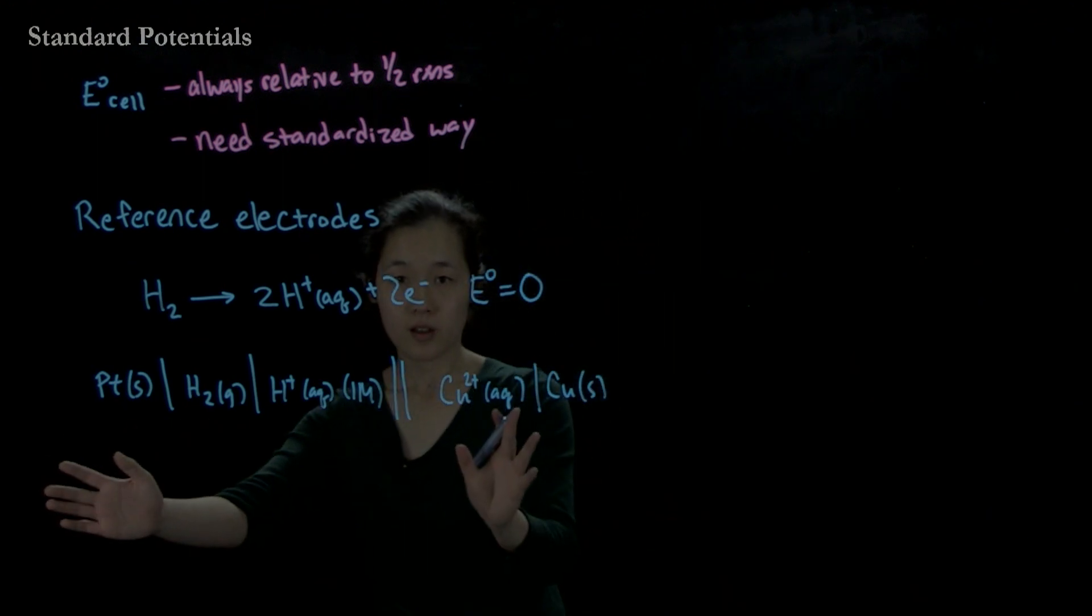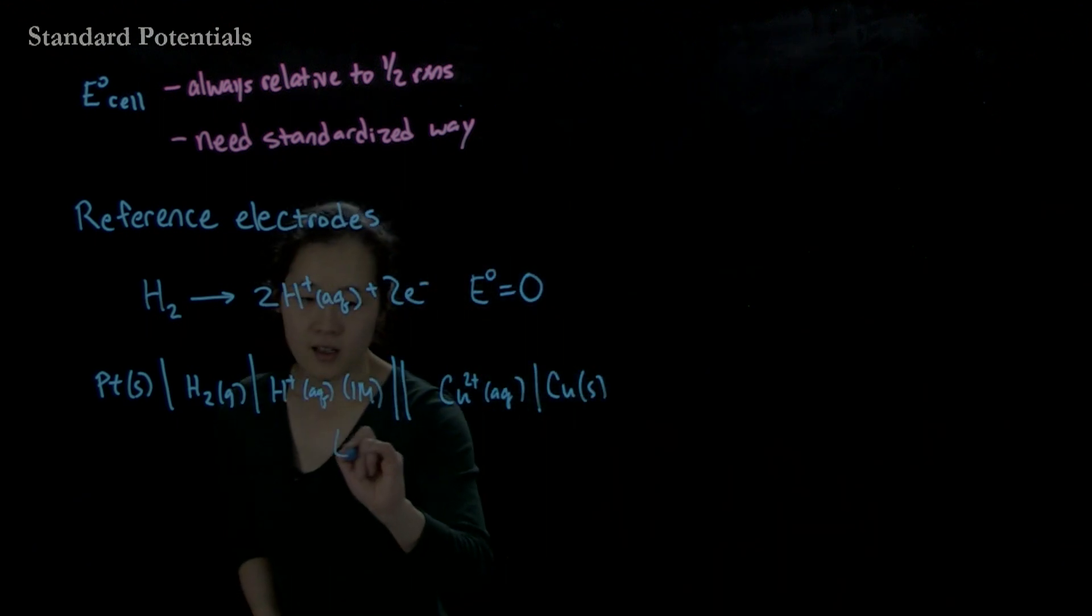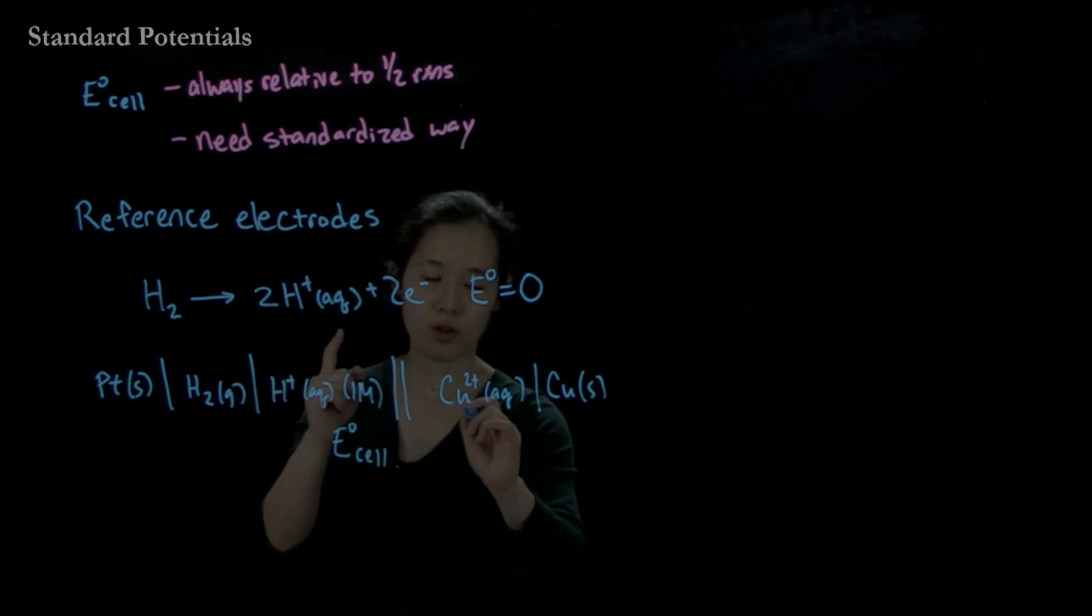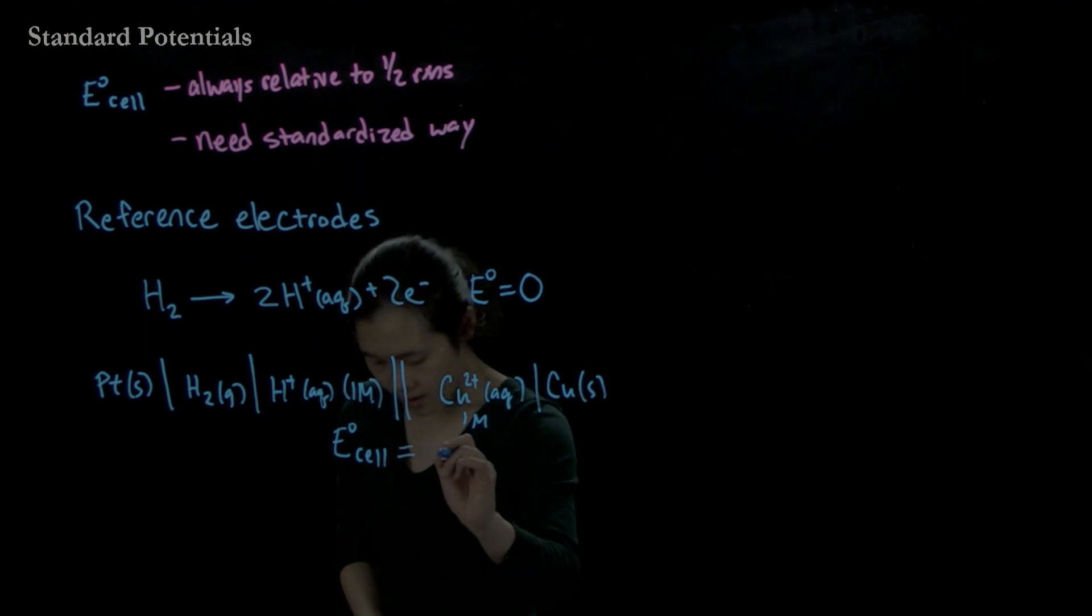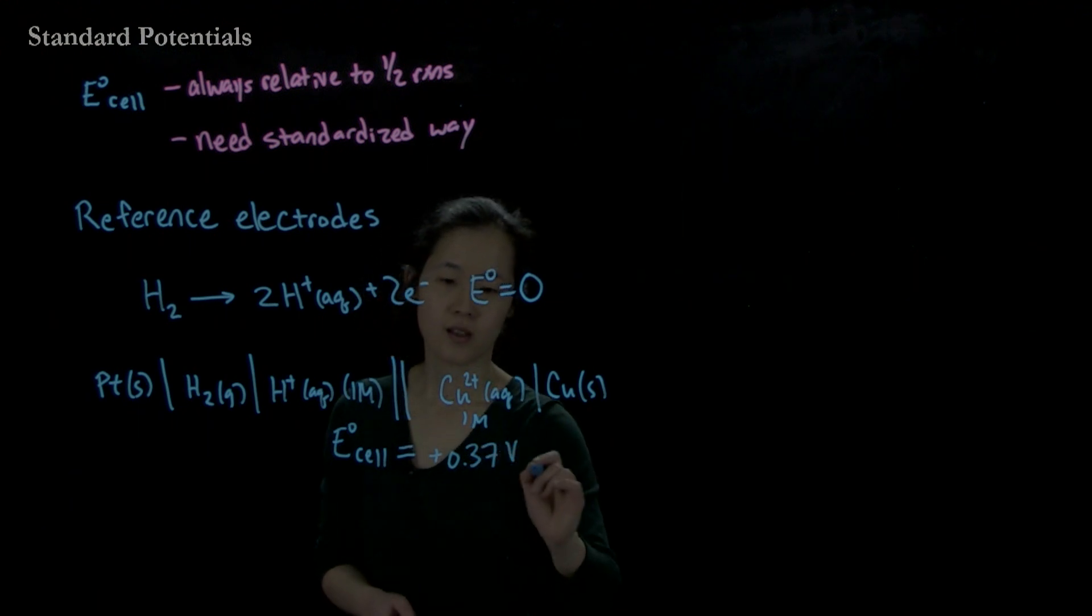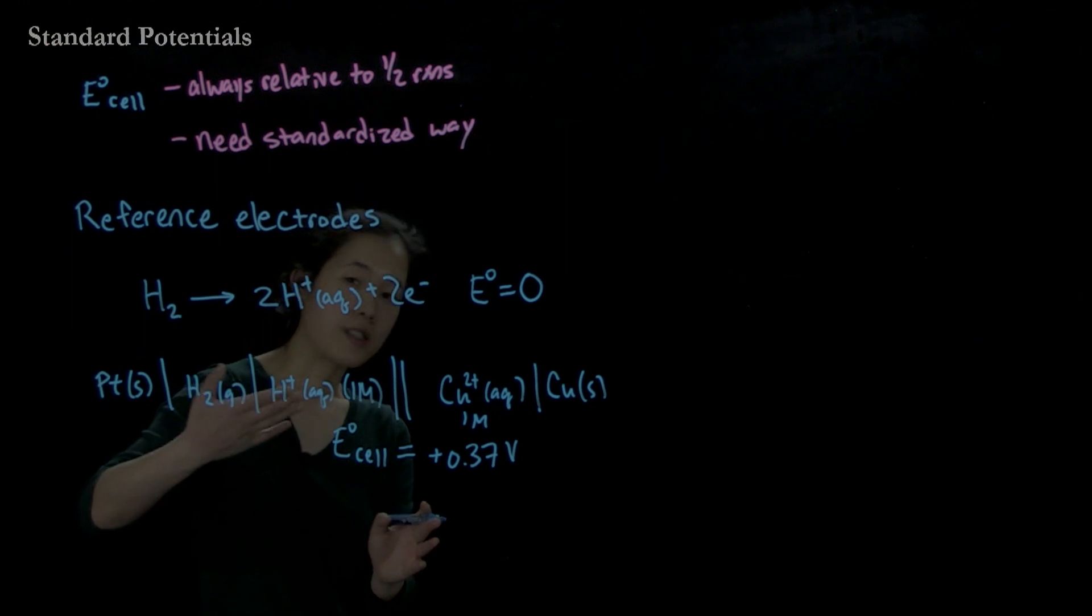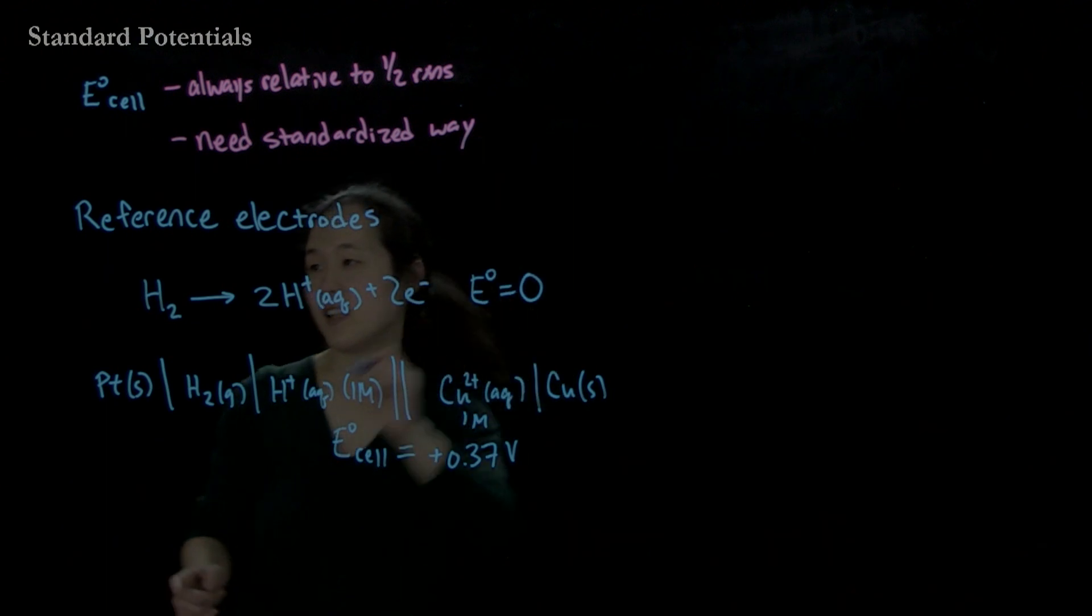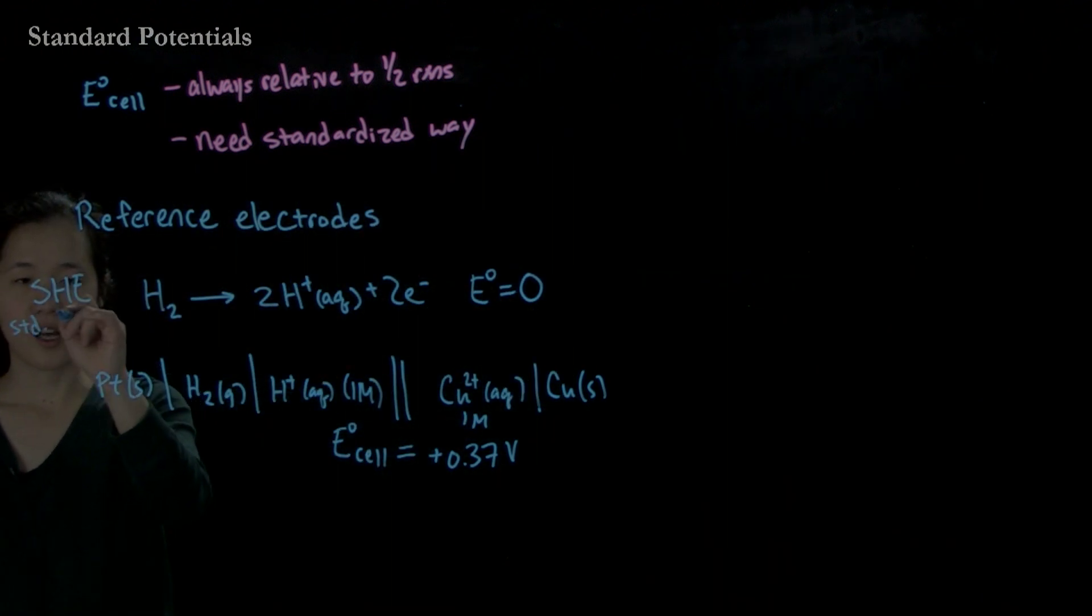We can measure the cell potential of this. And so it turns out that E naught cell - again, this is standard condition, so one bar, one molar, one molar, pure solid copper - and so this ends up being +0.37 volts. And so what this means is that if we then arbitrarily set our standard hydrogen electrode, this reaction is SHE, standard hydrogen electrode.